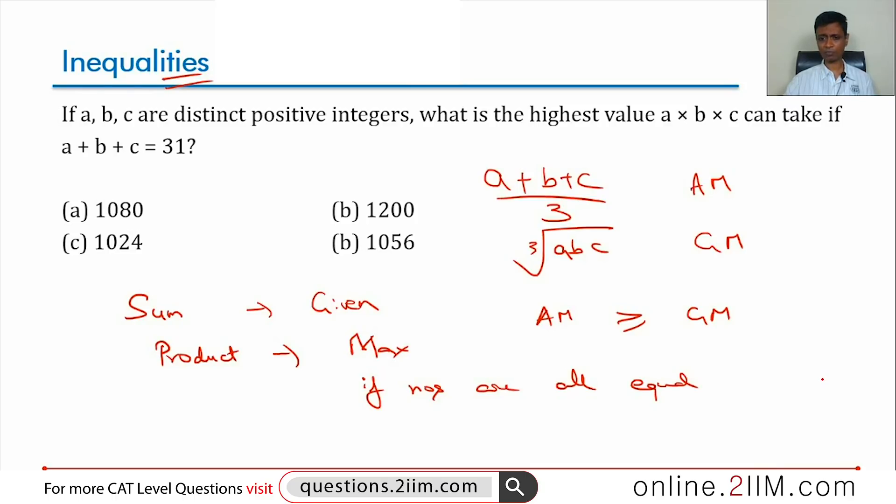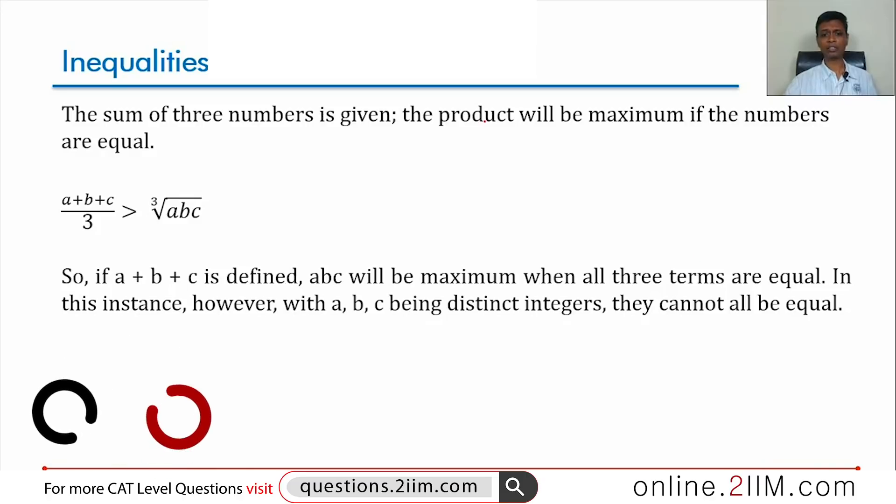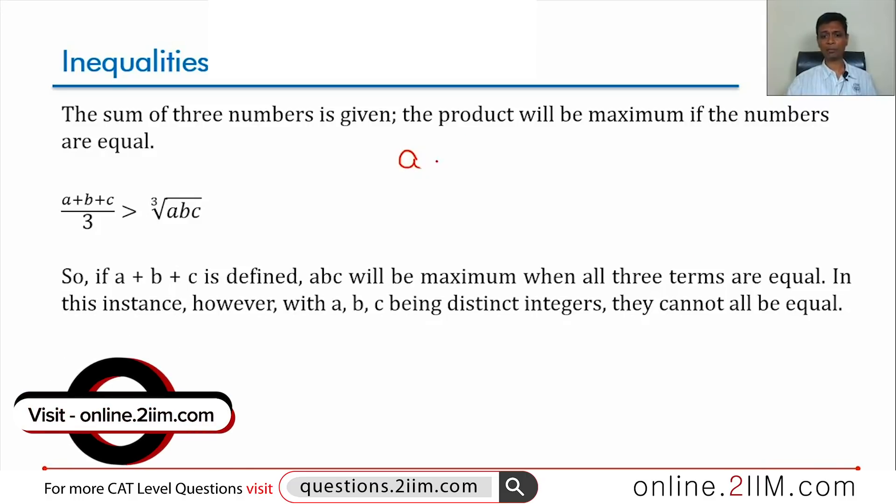But let us start, we are just going to build this and then go on to the solving part. We know that A, B, C add up to 31. If they were all equal, we would have 10.33, 10.33, 10.33. Obviously, this is not possible because we have to have integers. So, let us say we make it as 10 and 10, close to 10, this will become 11.